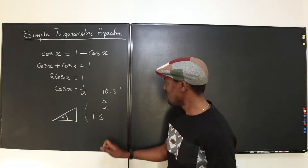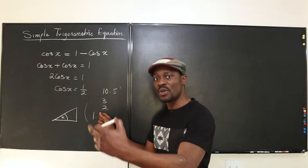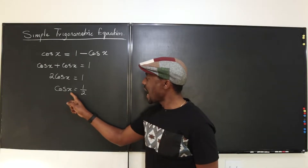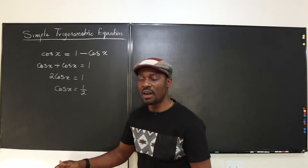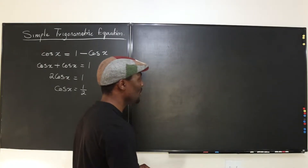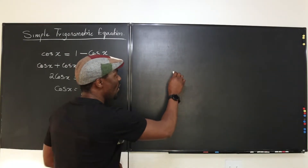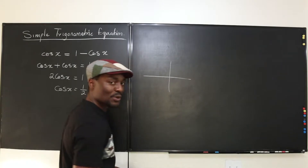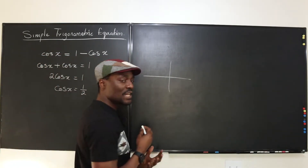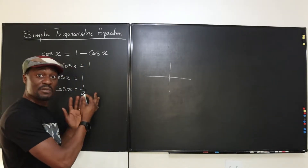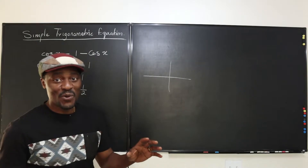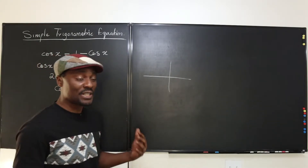Now we continue with the solution. Let us ask ourselves: what angle will you take the cosine of and obtain one half as your answer? Let's go to the unit circle. You don't have to have the perfect unit circle — you're just looking for the values where it's going to be one half. You have to memorize this before you even start solving equations: the cosine of pi over three, or 60 degrees, is what gives you one half.